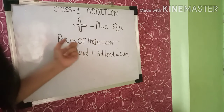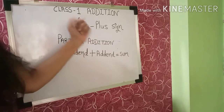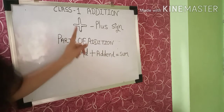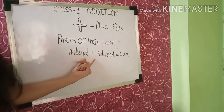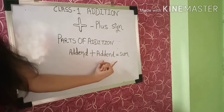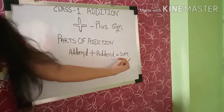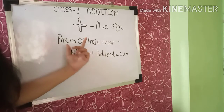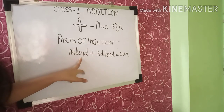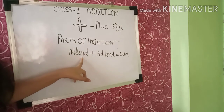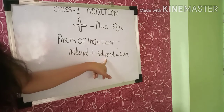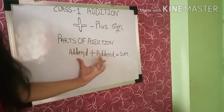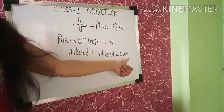What are the parts of addition? The plus sign is a part of addition. The formula is: addend plus sign addend equals sum or total. Any number or anything we are adding is called an addend, and when we combine two addends we get the sum.